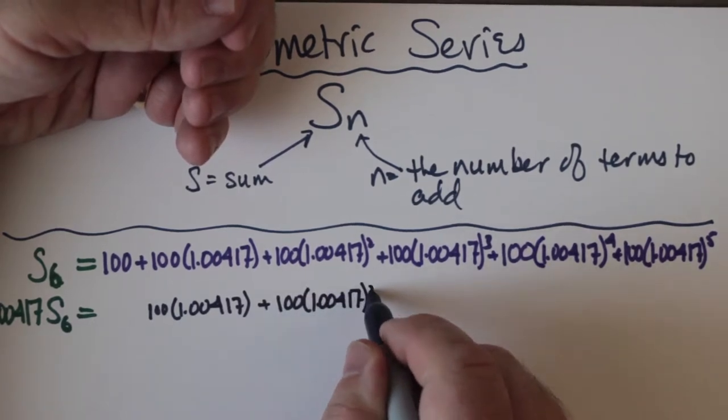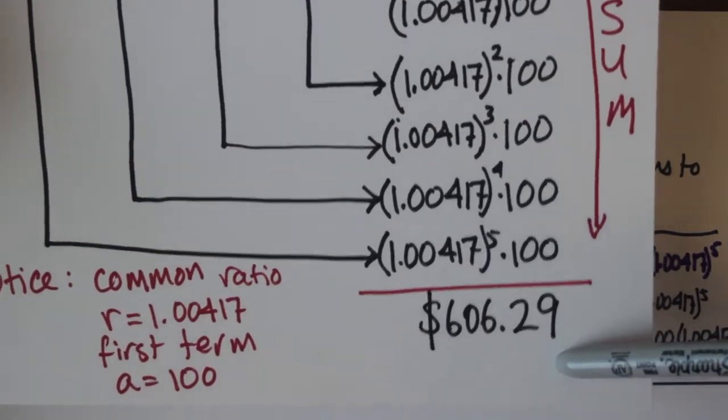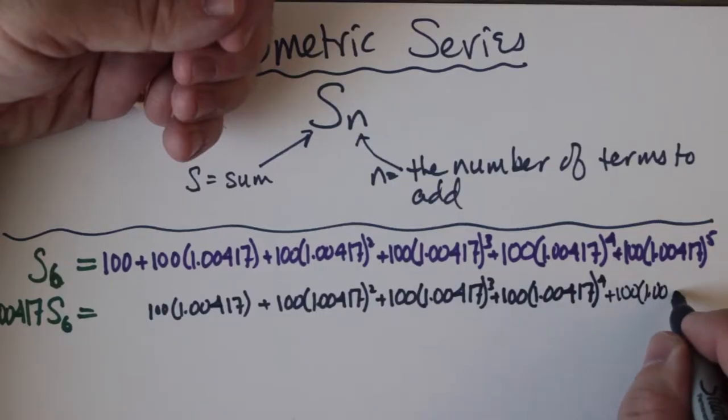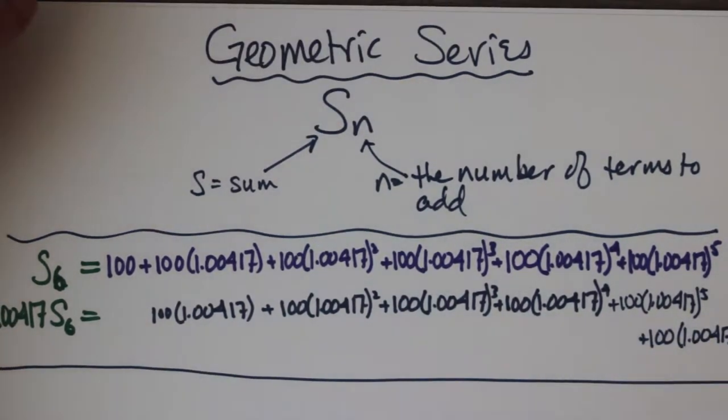If I have S6, I really end up with the same sequence as I have here, right? These are the same. I add those up, I get this, and I'll end up with $606.29.